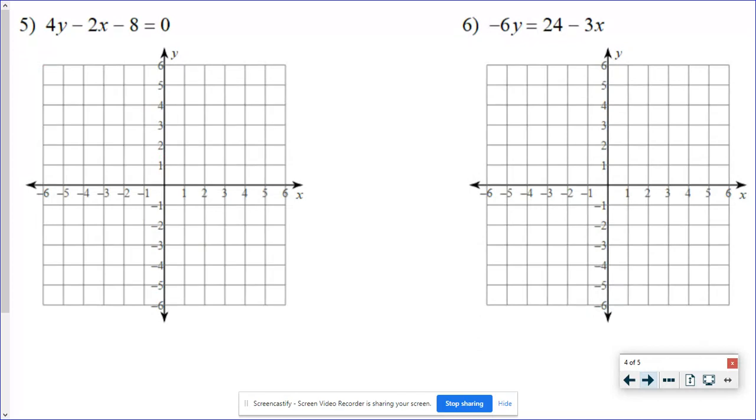On these last two, remember, you're still trying to get the y by itself. For number 5, I hope that you remember I did show a trick once. When I have everything all on one side and it's equal to 0, sometimes instead of moving the 2x and moving the 8, it might be faster to just move the 4y. You don't have to do this problem this way, but it does work.